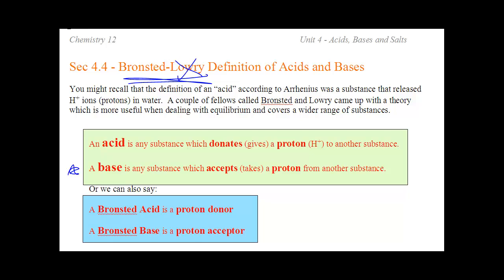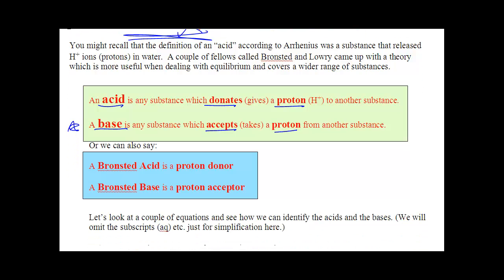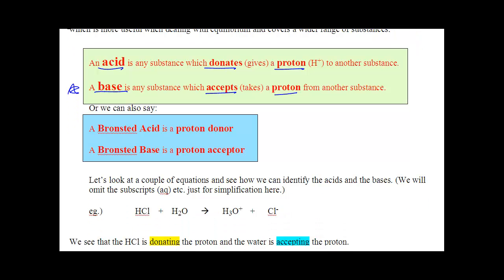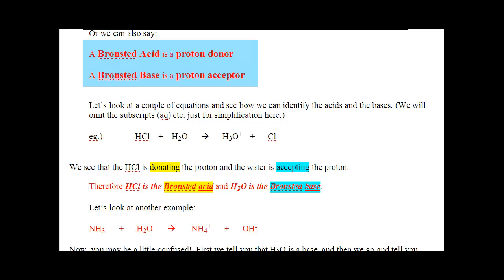So what did he say? He said an acid donates the proton, and a base accepts the proton. That's it. If you donated a proton, you're called an acid. If you've accepted a proton, you're called a base. End of story. So what does that look like? Well, we need to identify acids and bases.